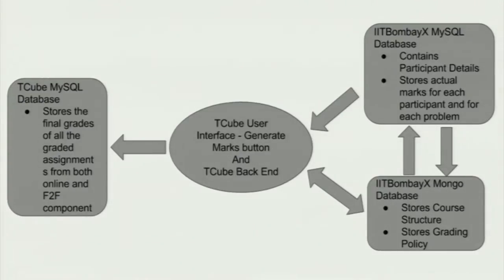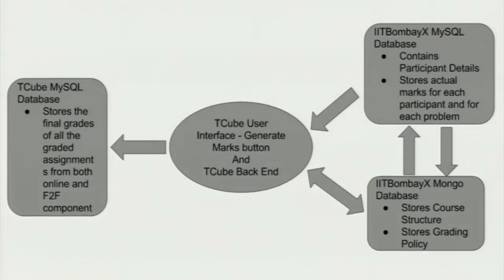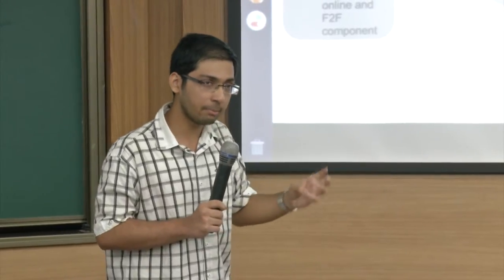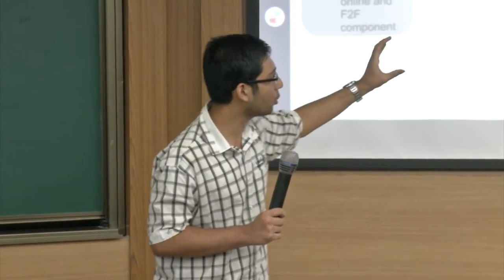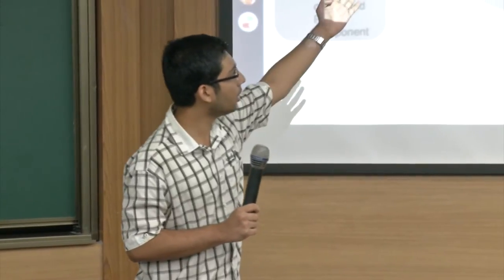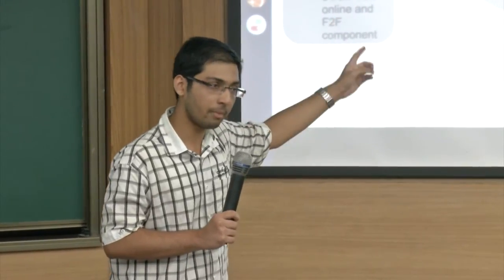This is the basic structure of the interface and process flow. In the center is the TQ user interface. On the right-hand side is the IIT Bombay X MySQL database and Mongo database, and on the other side is our TQ MySQL database. The course structure and grading policy of the online course is stored in the Mongo database of IIT Bombay, while the actual marks for each participant and each question are stored in the MySQL database. We have to get the course structure from Mongo and the actual marks from MySQL.